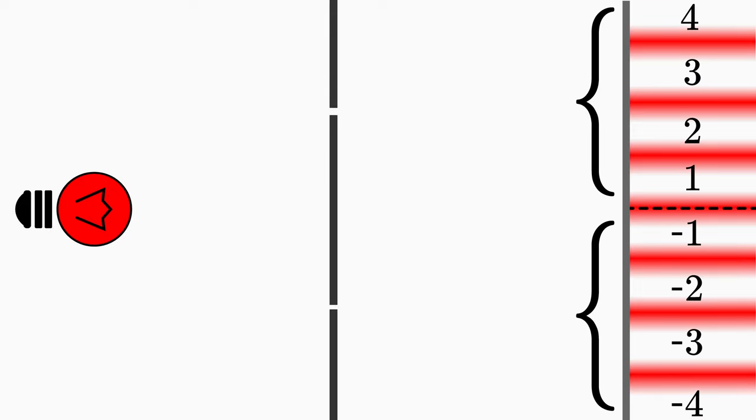Since the interference fringes occur symmetrically on both sides of the middle fringe, it is sufficient to look at only one side of the screen. For this purpose, we only use positive integers for m.